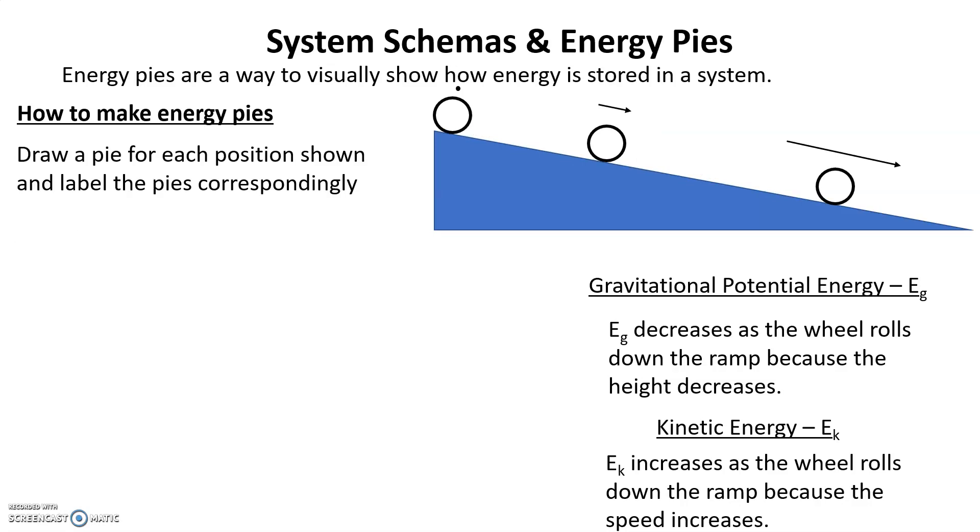Now we need to draw a pie for each position shown and label those pies correspondingly. Let's call that first picture of the wheel at the very top A. Notice I've drawn a pie A. I put a dot in the center because that will help me divide up the pie later. The next wheel down the ramp is B, so I'm going to make another pie B. And finally near the bottom is wheel C, so I've drawn another pie C. Notice all the pies are the same size.